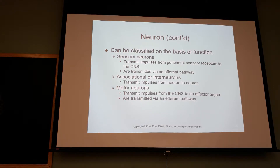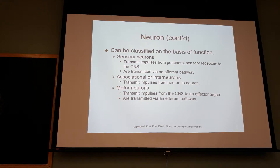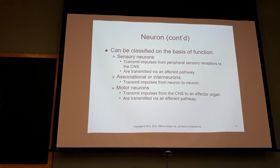Sensory neurons transmit impulses from the periphery to the brain. So if I slam my finger, it registers pain and takes that information through the spinal cord — up the spinothalamic tract into my brain, into the somatosensory area — to be interpreted as pain to my left finger.